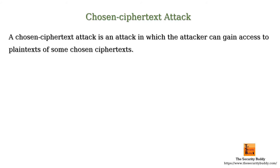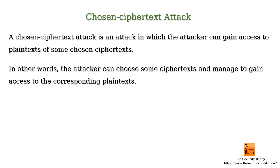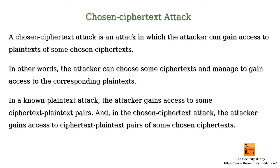What is a chosen ciphertext attack? A chosen ciphertext attack is an attack in which the attacker can gain access to plaintexts of some chosen ciphertexts. In other words, the attacker can choose some ciphertexts and manage to gain access to the corresponding plaintexts. Note that in a known plaintext attack, the attacker gains access to some ciphertext-plaintext pairs, whereas in the chosen ciphertext attack, the attacker gains access to pairs of some chosen ciphertexts. As the attacker can choose the ciphertexts, he can analyze the pairs in a better way.